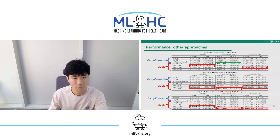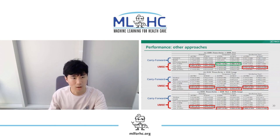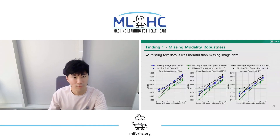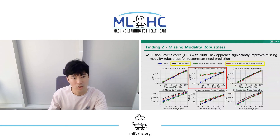Then, we demonstrate the performance superiority of our whole module over the previously suggested algorithms plus transformer fusion model MT. Our models surpass all others in all clinical tasks and modality combinations except one. Our investigation on missing modality robustness reveals that missing text is less harmful than missing image, and vasopressor need prediction can become more robust against missing modality using fusion layer search with a multi-task approach.